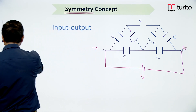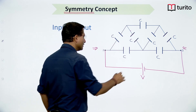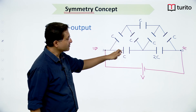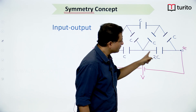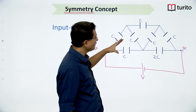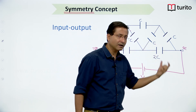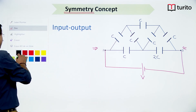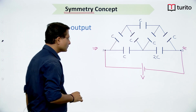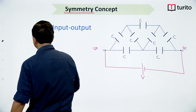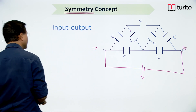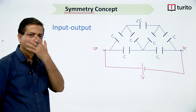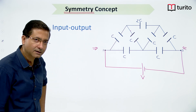If the upper capacitor is made 2C, then from either side you see 2C at the top — the circuit has input-output symmetry. I hope you understood the meaning of input-output symmetry. Now how do we use this symmetry to reduce and solve the circuit?